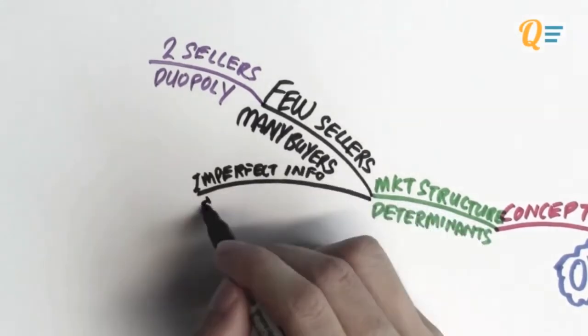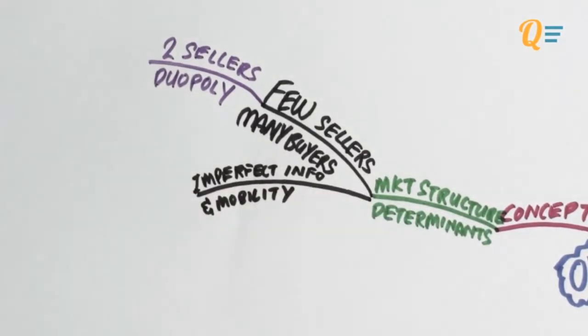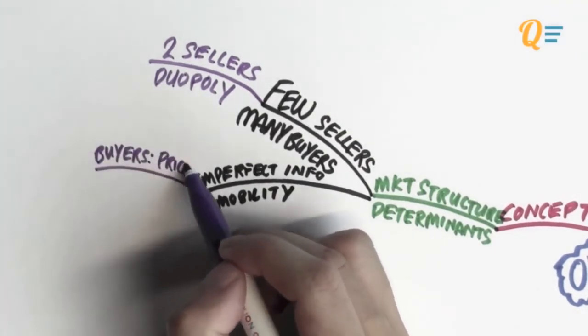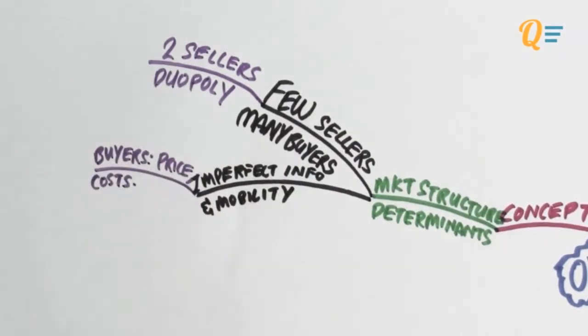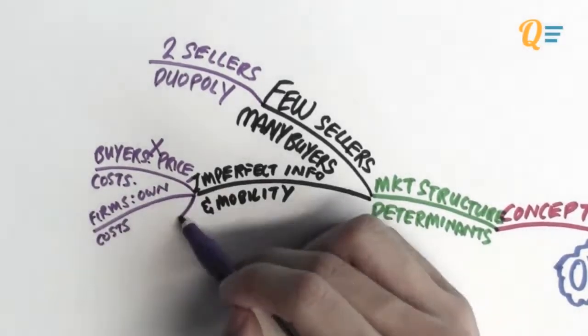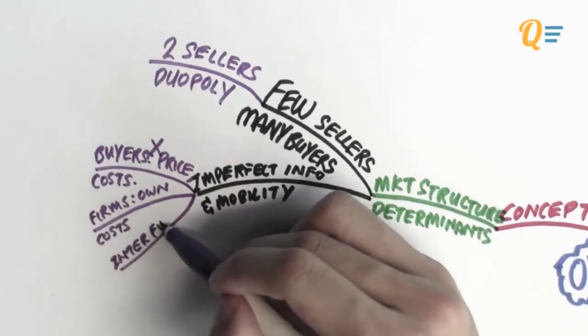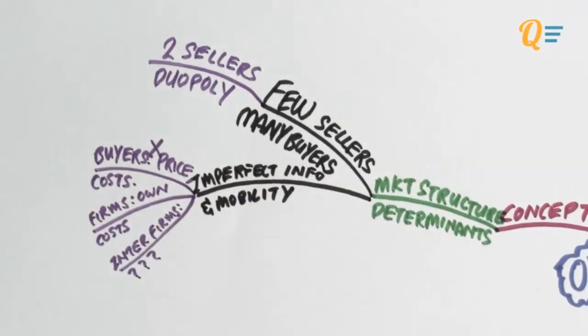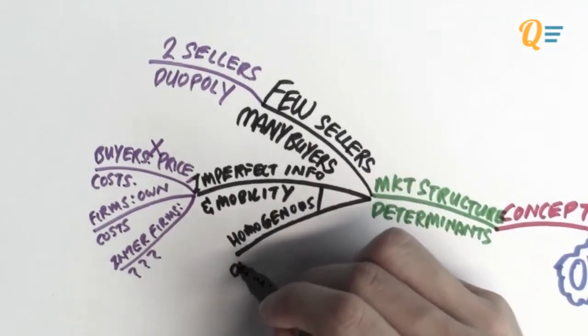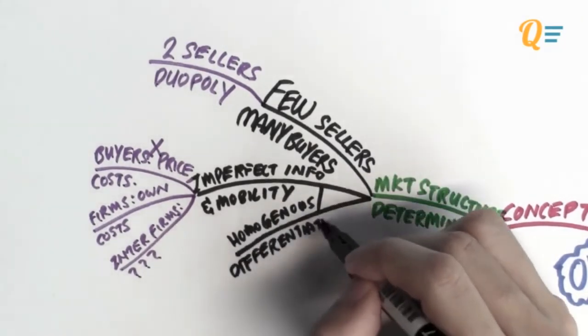The second determinant would be imperfect information as well as mobility. So what this means for the buyers is that they do not know what are the different prices that firms can charge at. They don't know the firms' cost structures. The firms know their own cost structures. They might know the other firm's cost structure, but they are not very sure on what is the exact strategy and the exact thing that other firms would do.